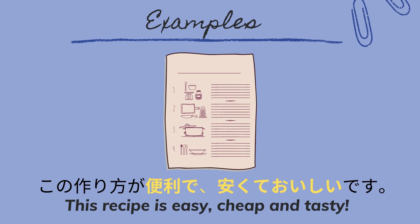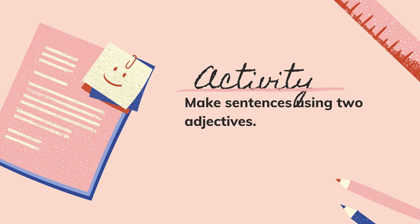The next one is 'Kono tsukurikata ga benri de, yasukute, oishii desu,' meaning this recipe is easy, cheap, and tasty. Here we connected three adjectives using Te-forms.